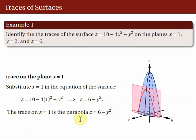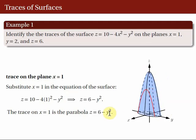Here's the illustration. The blue surface is Z = 10 - 4X² - Y². The red plane is the plane X = 1, which is parallel to the YZ coordinate plane. So, the trace of the surface on the plane X = 1 is this red curve defined by Z = 6 - Y².